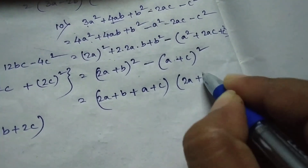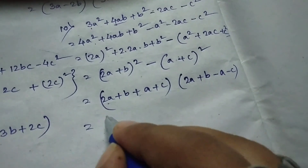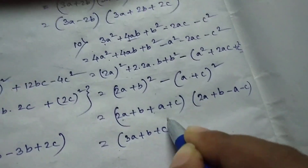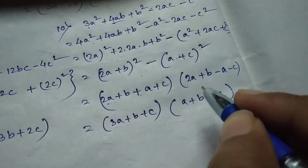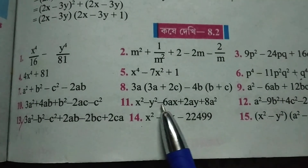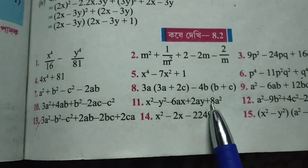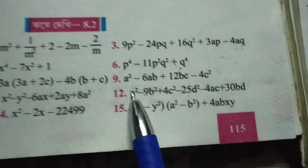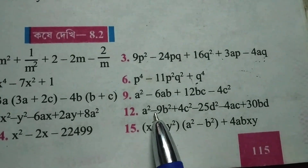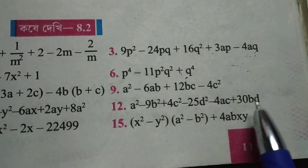2a plus b minus a minus c. 3a plus b plus c. 2a plus b minus c. 3a plus b minus c.